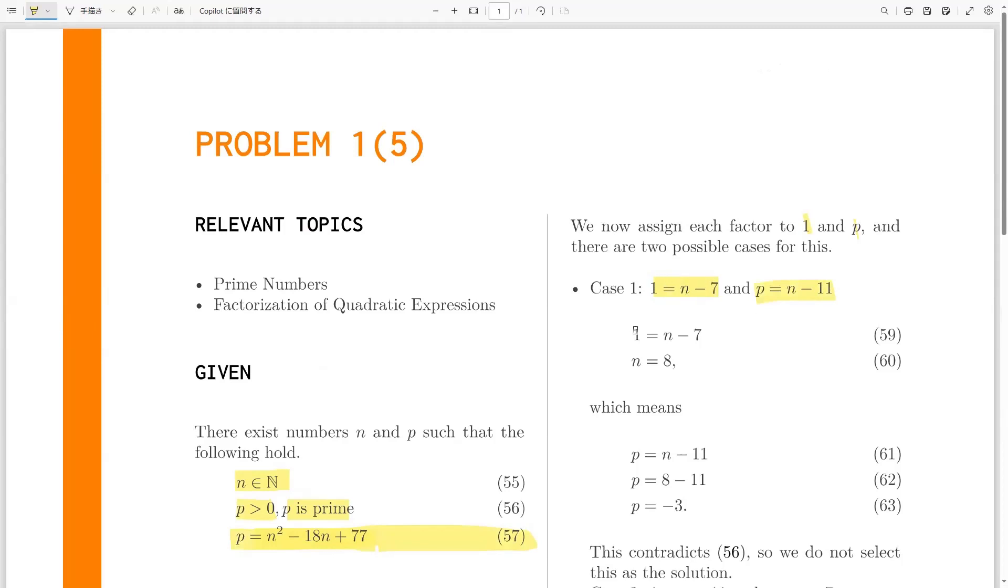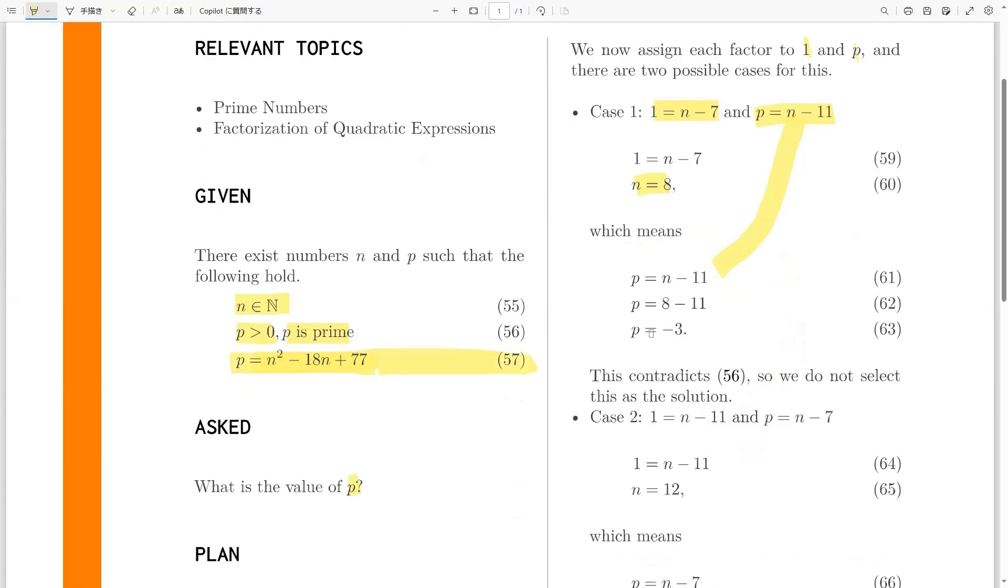If we do the first one, 1 equals n minus 7, we see that n equals 8, right? We just move the 7 to the other side. And now, because we know the value of n, we can get the value of p from this one. So, p equals n minus 11 from here, we replace n with 8, and we get p equals minus 3. Now,